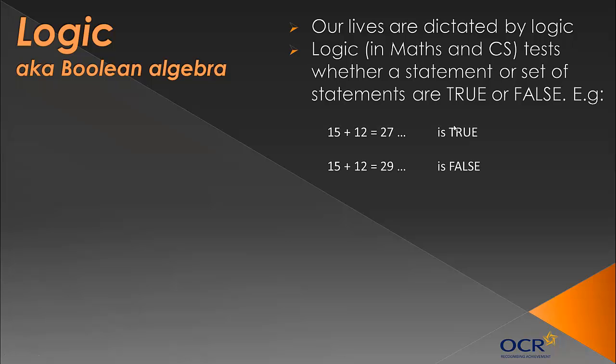So two statements here. 15 plus 12 equals 27. That's obviously true if you add that up. 27 is actually the answer. That will result in true. If you run that through a programming language, it would result in true. And this, 15 plus 12 equals 29, is false. And we'd represent that with true being 1 and false being 0. And those are the Boolean values and these are the binary values. You can use them interchangeably. Just true is 1, false is 0.